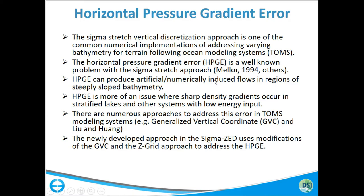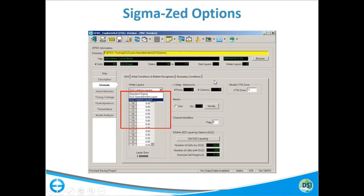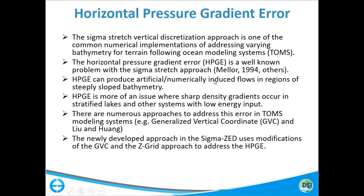There are a lot of pressure gradient error issues that occur. When you have a standard sigma stretch grid, you have the same number of layers everywhere in the model domain. So when you have a very steeply sloped area and the cells are relatively large, the bottom layer of a shallow cell and the bottom layer of a deep cell may be literally connected by just one or no cell.